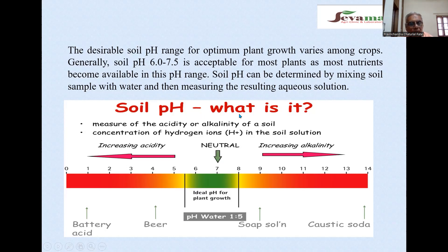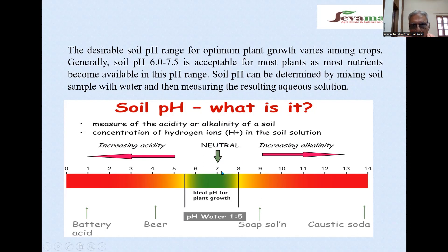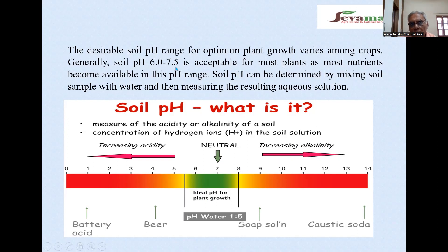Soil pH measures the acidity or alkalinity of the soil and measures the concentration of hydrogen ions in the soil solution. When pH is 7, the soil is neutral. When soil pH declines below 7, acidity increases. When soil pH rises above 7 — to 8 or 9 — alkalinity increases. The ideal soil pH for plant growth is 6.5 to 7.5, or broadly 6.0 to 7.5.